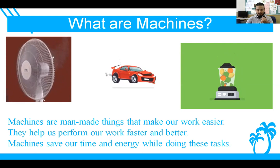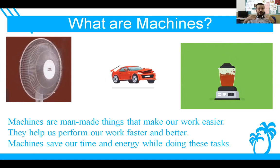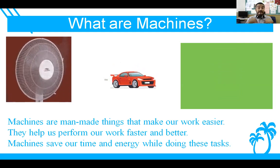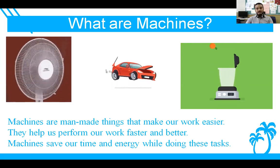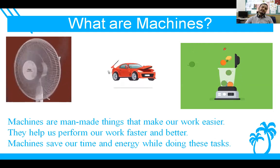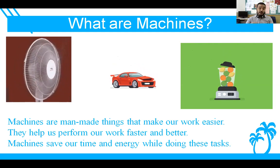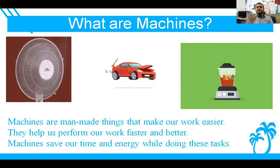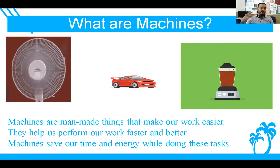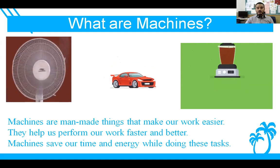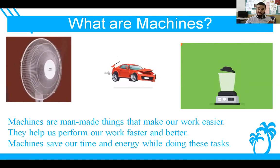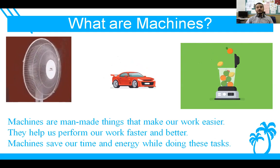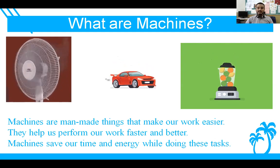Machines are manmade things used to make our work easier — they save our time because they are faster and better than us humans. Like if you are making juice by hand it takes a lot of time, but using a juicer you get juice within minutes. If you travel by walk it takes long, but using a car you can go from one place to another in no time. Those are the machines which make our work easier.